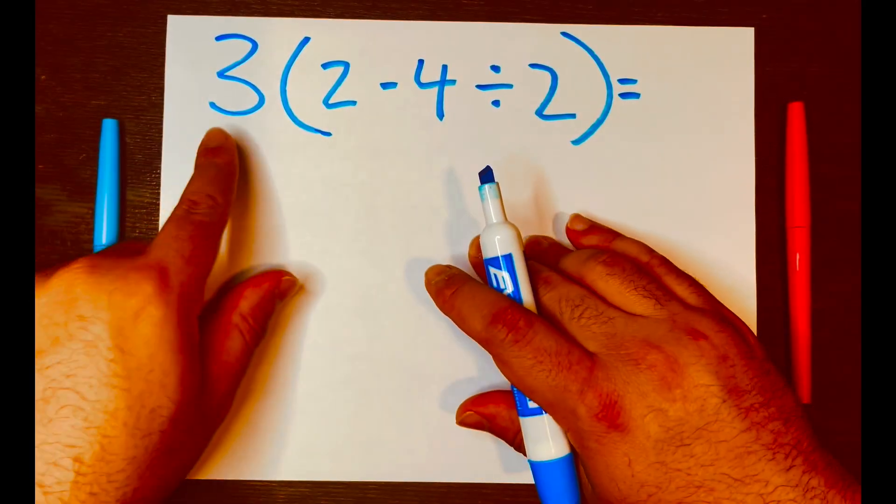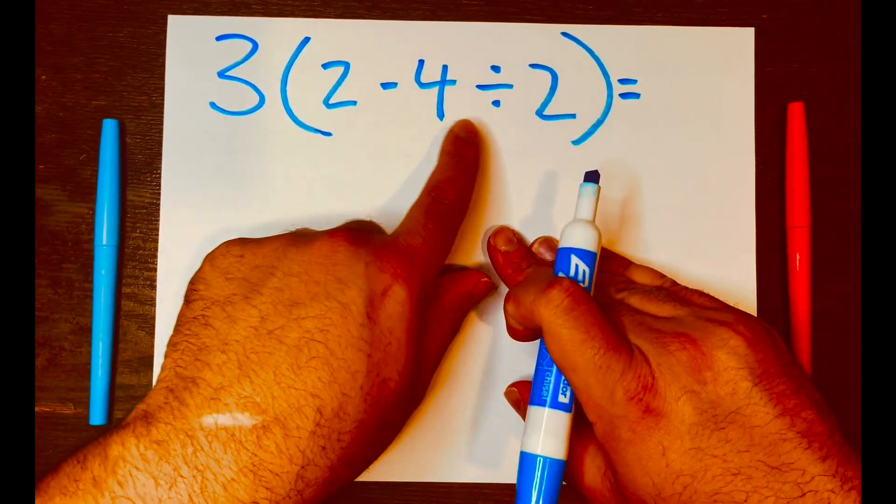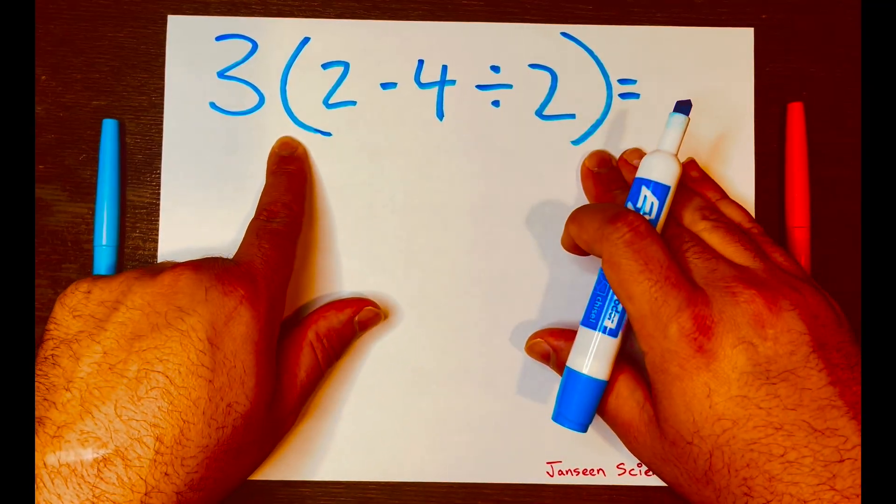Hi, everyone. Today, we're going to solve this easy problem. Three, and then you have two minus four divided by two inside these brackets, or in other words, parentheses.